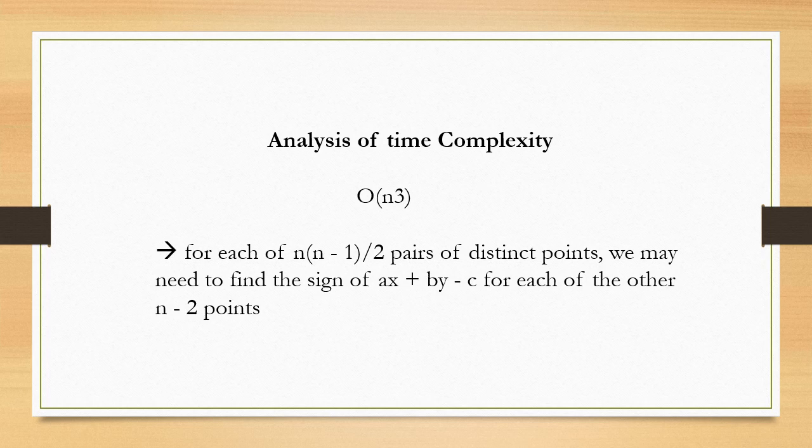Now we analyze the time complexity of this algorithm. The time complexity is O(n³). For each of the n(n−1)/2 pairs of distinct points, we may need to find the sign of ax + by − c for each of the other n − 2 points. That's all, thank you.